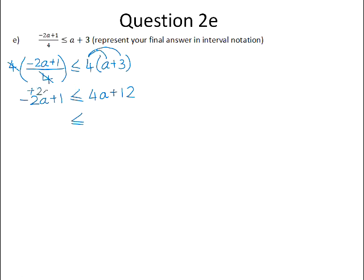If we add 2a to both sides and subtract 12 from both sides, that gives us 6a, 1 minus 12 is negative 11. Divide both sides by 6, and you get a to be greater than or equal to negative 11 over 6.